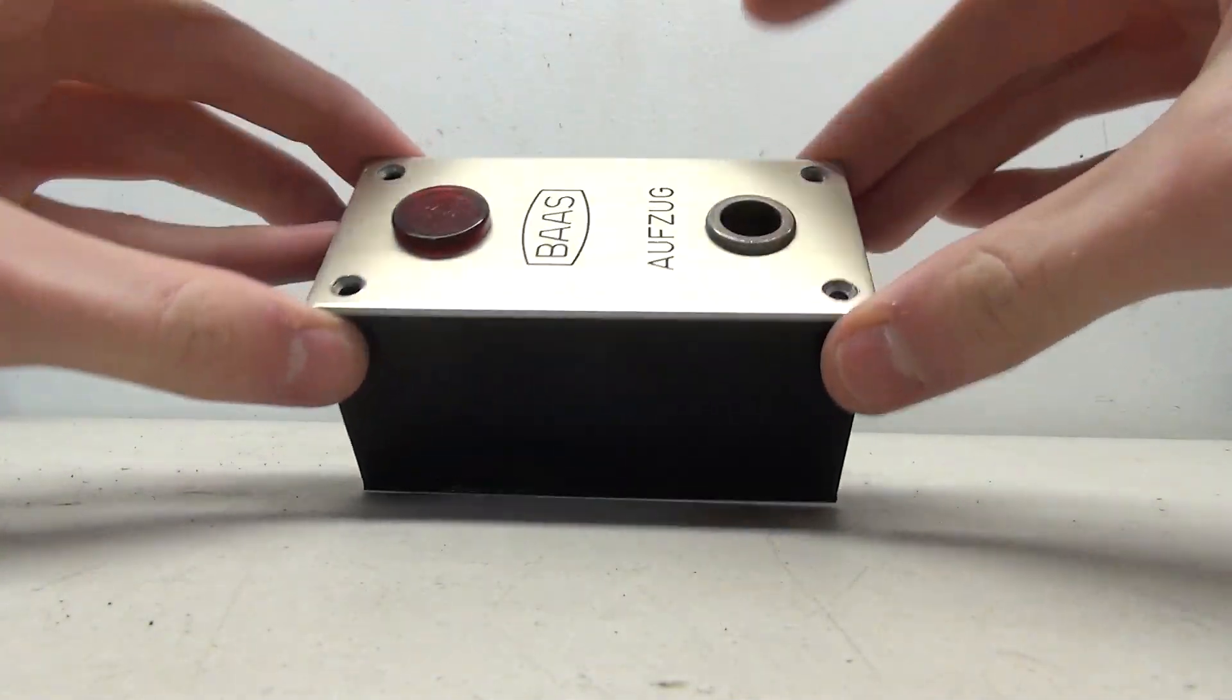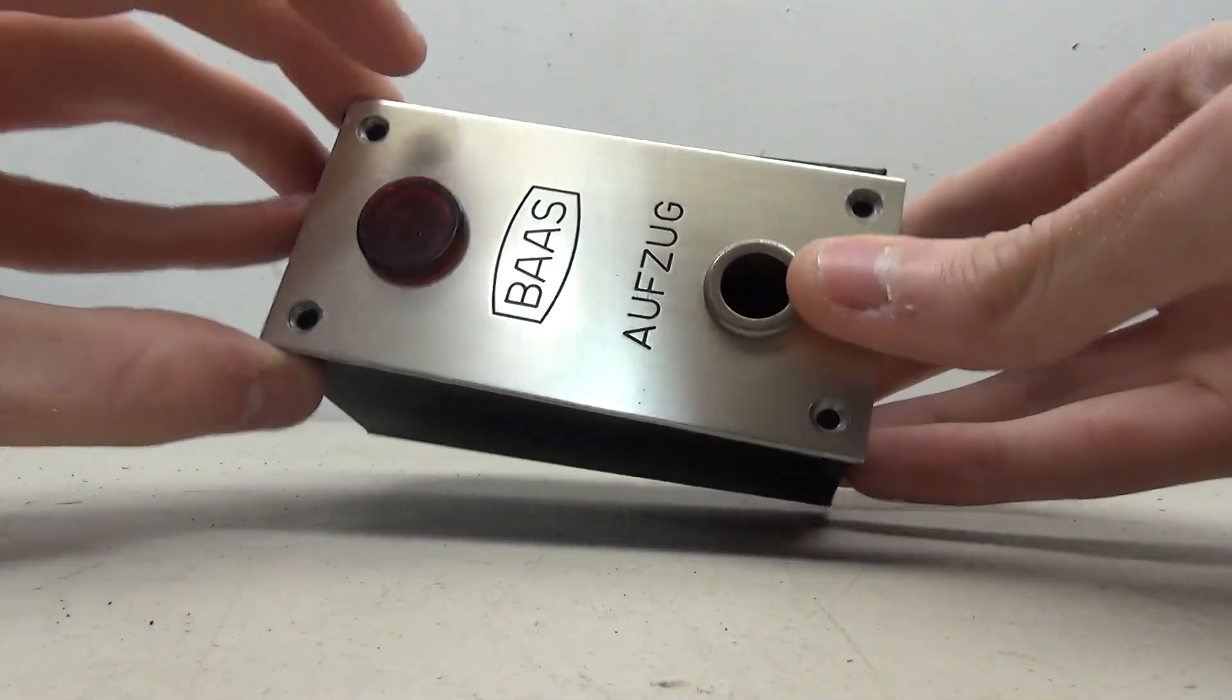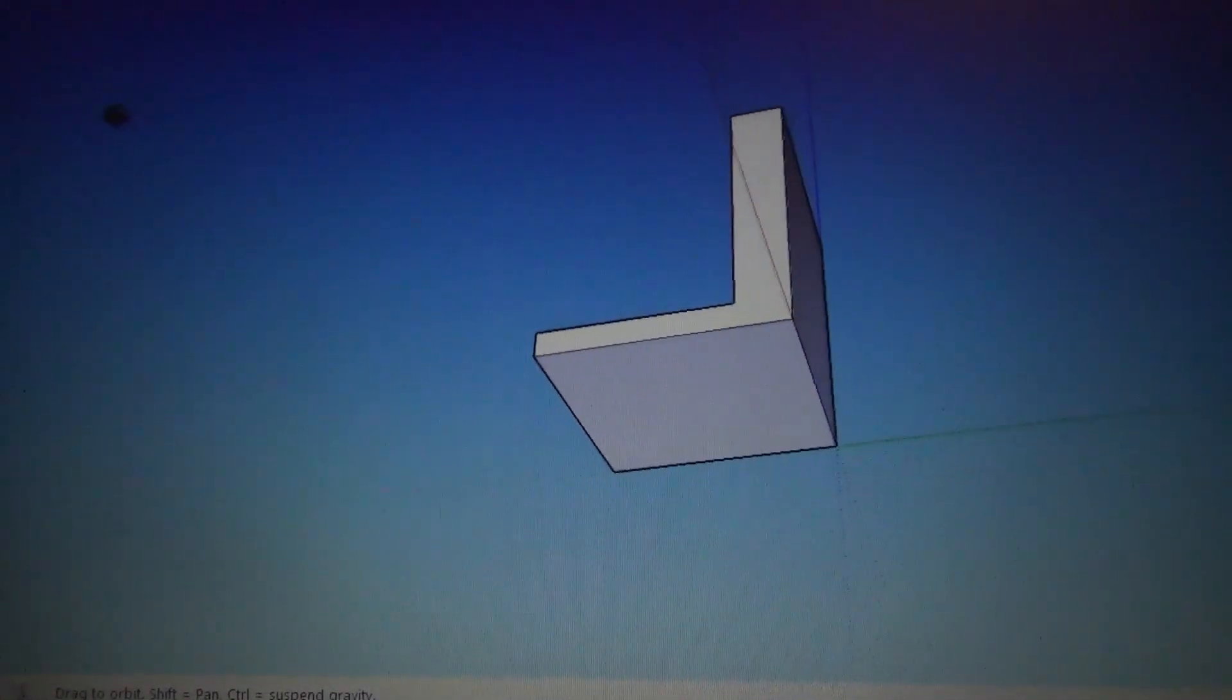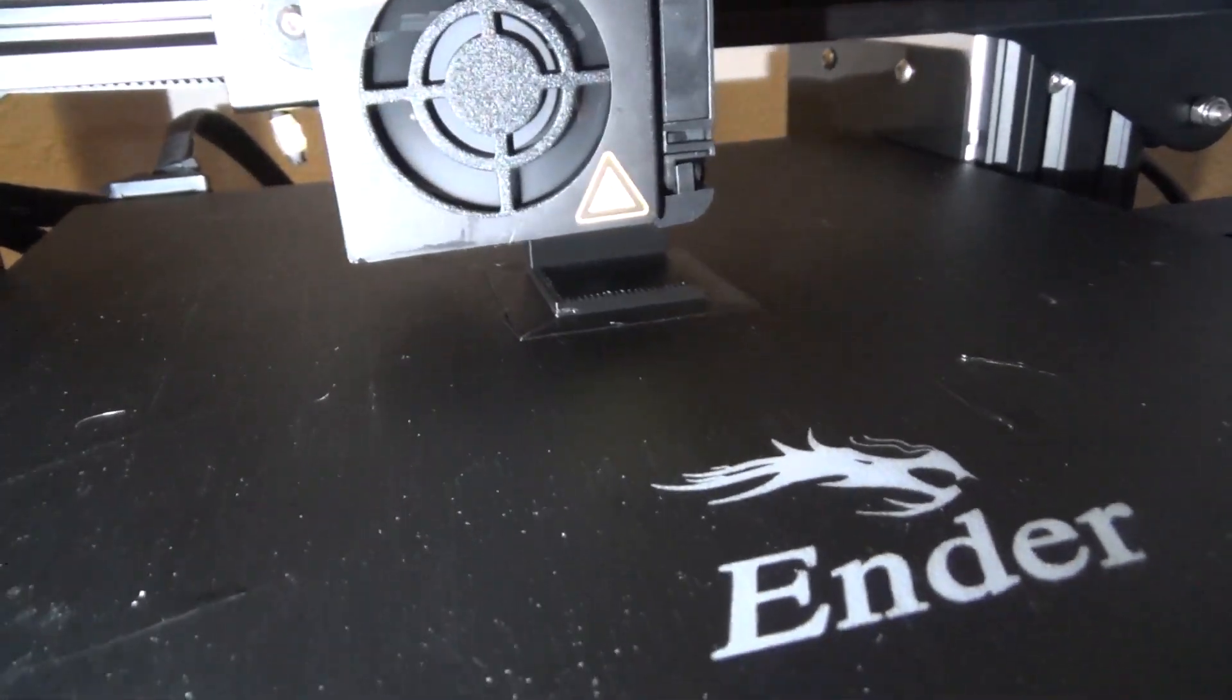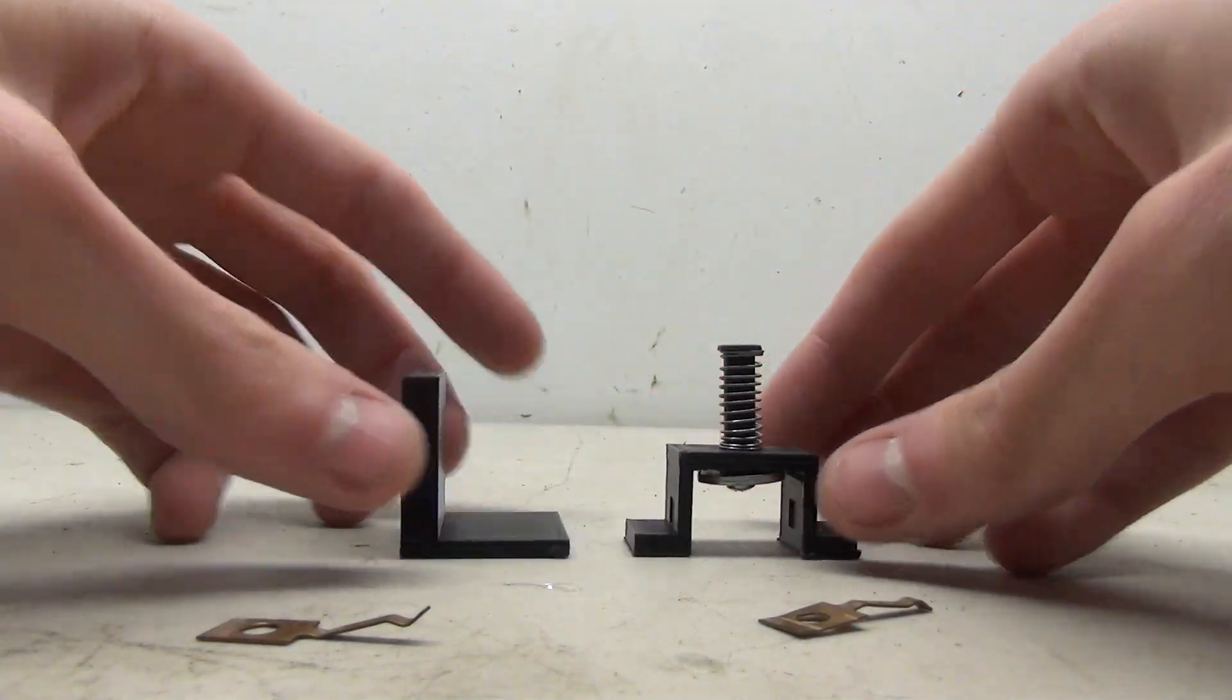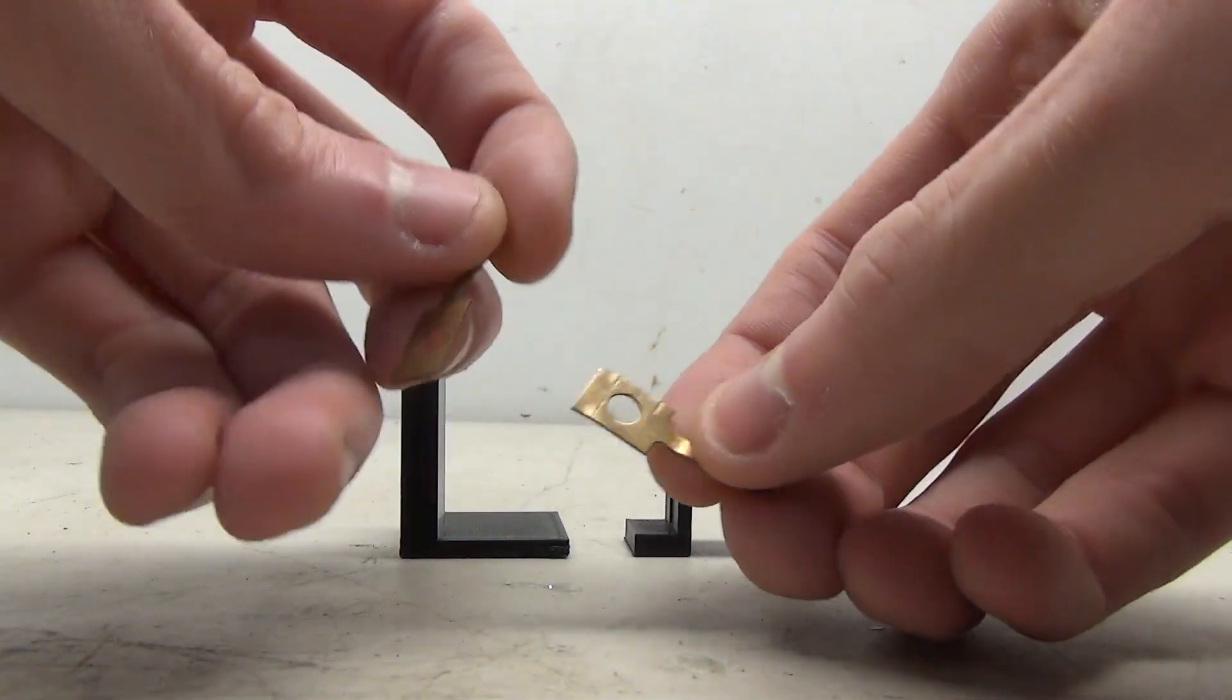Now that the box is made, it's time to design the components that will go inside to make this a working fixture. These are the pieces that I made for the internals of this fixture. I also have these metal pieces which are going to serve as the contacts.